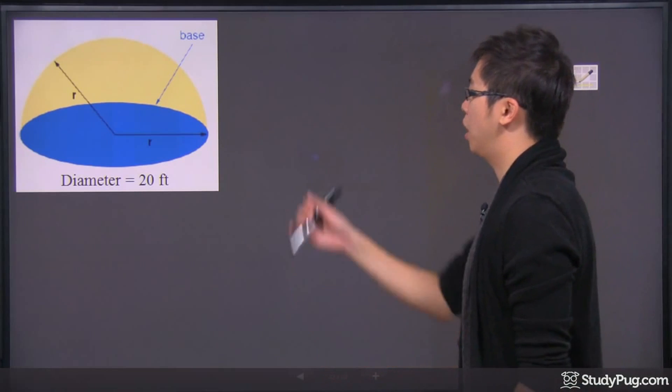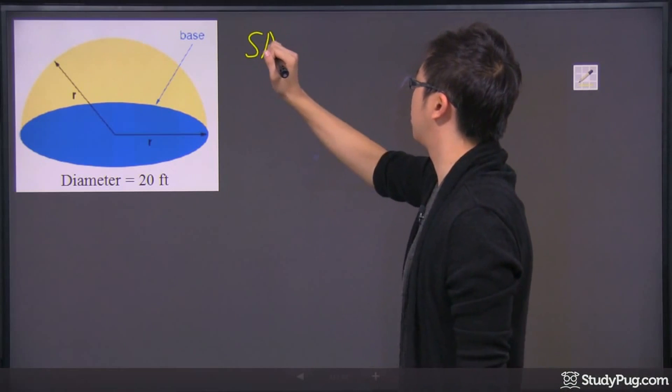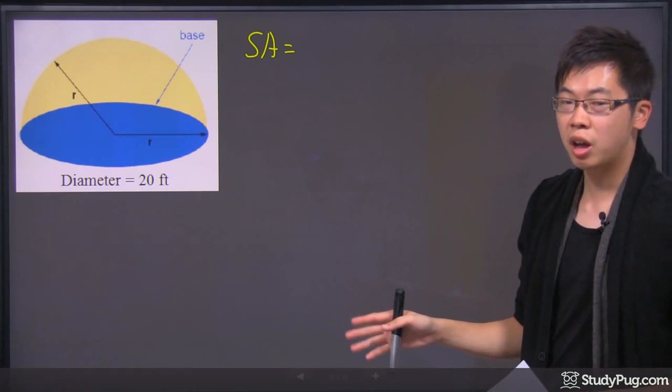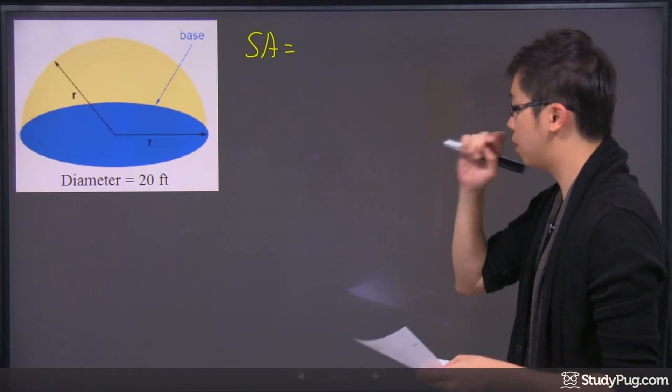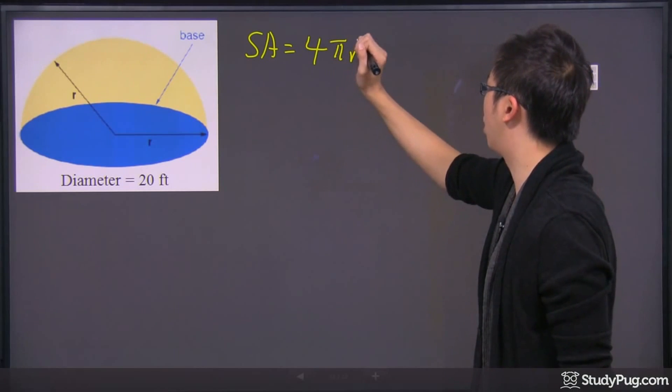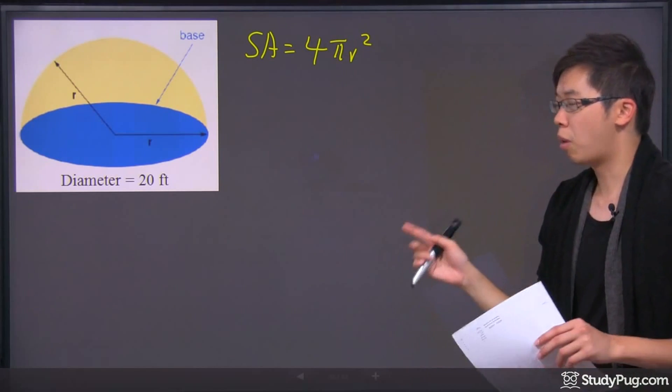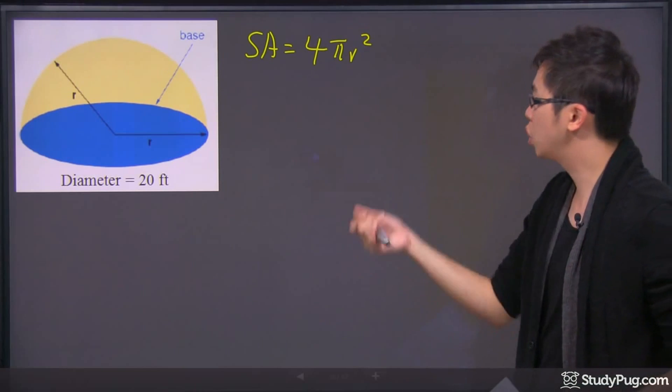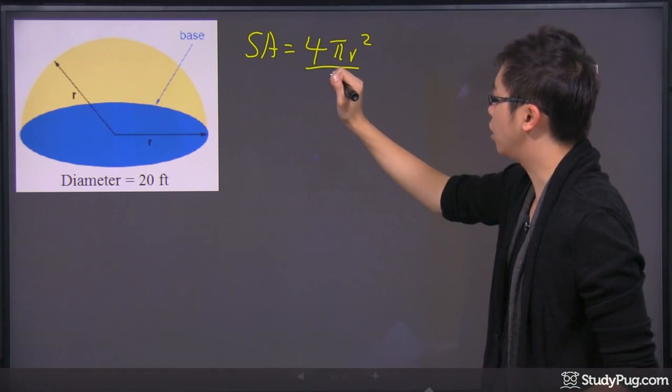So what we're going to do is just go ahead and fill in the equations here. So surface area - the equation for the surface area of a sphere is actually just 4πr². So let's put 4πr². Now the problem with this question here is it's only half of a sphere, so we are supposed to divide it by 2.